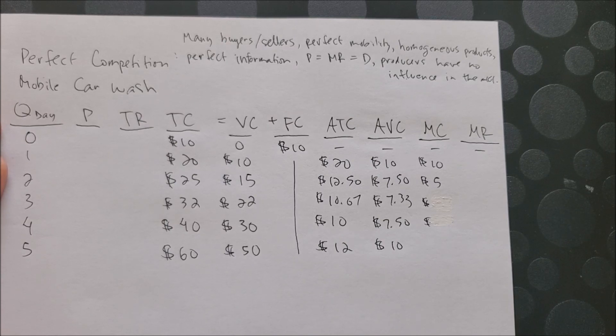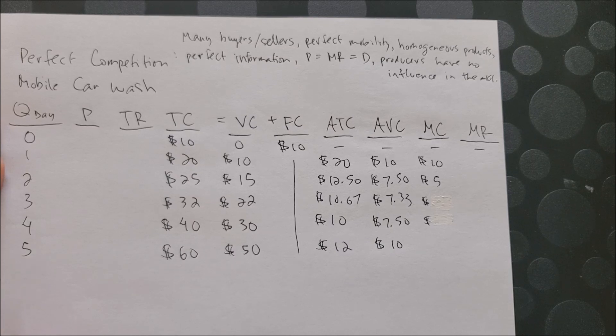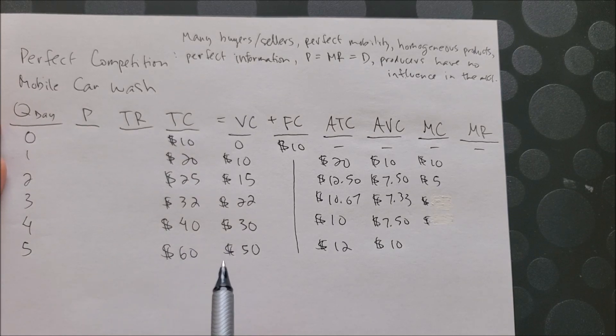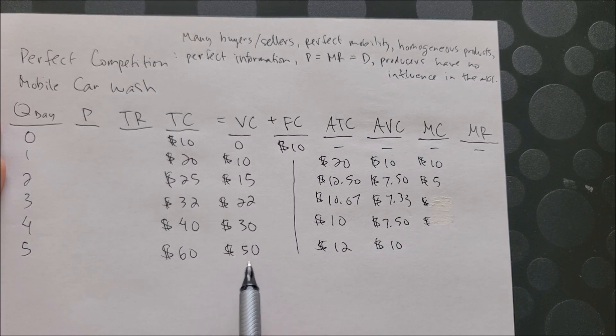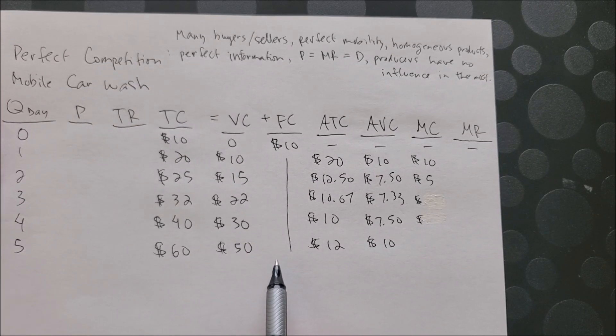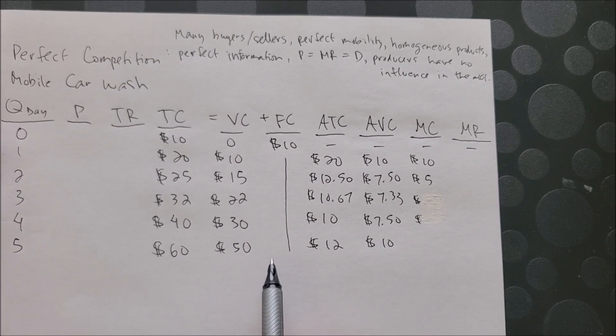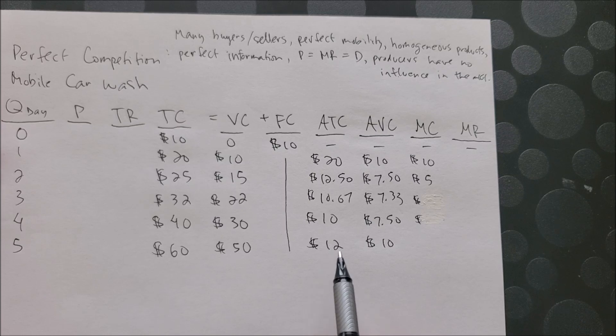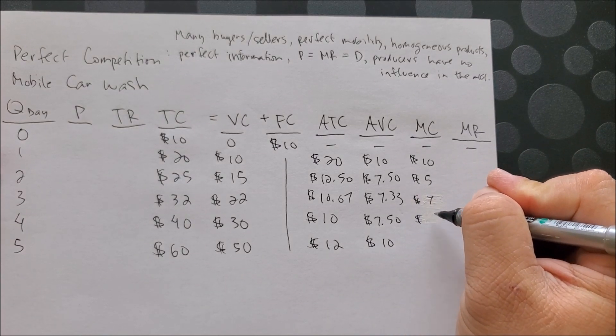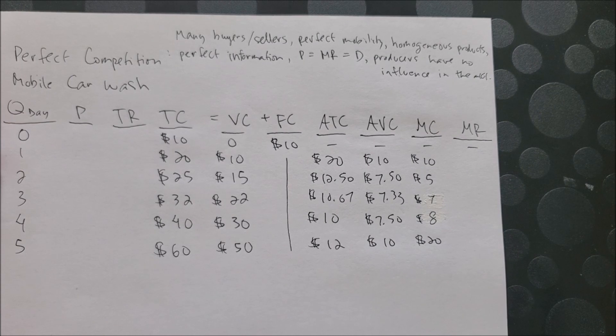So if you remember our cost and production example of the mobile car wash, I have given you the same numbers once again: quantity in days, total costs, variable costs which is your labor, and fixed costs which is given at ten dollars. And if you remember, we were able to calculate the average cost curves - ATC, AVC, and marginal costs - which I am forgetting to include the last three to complete the column.